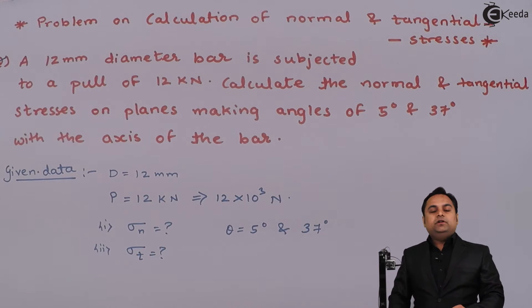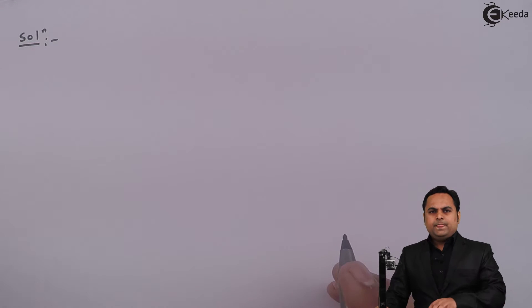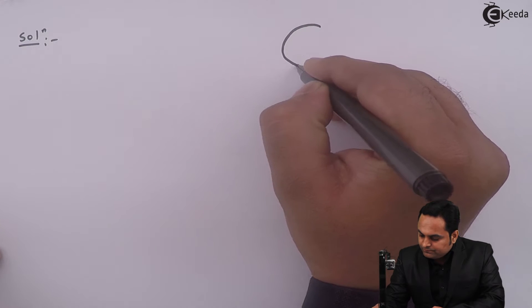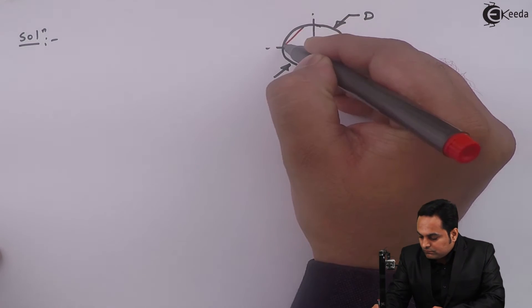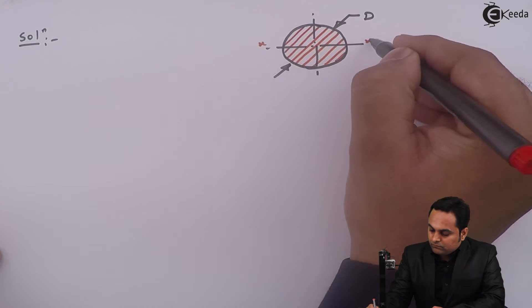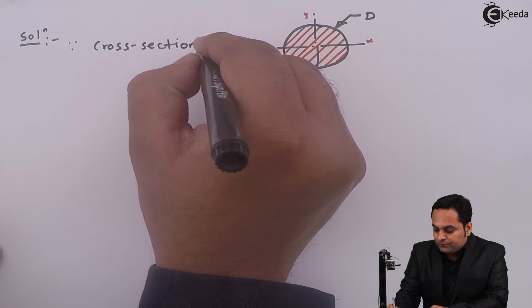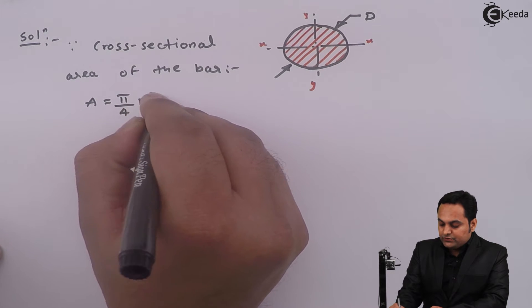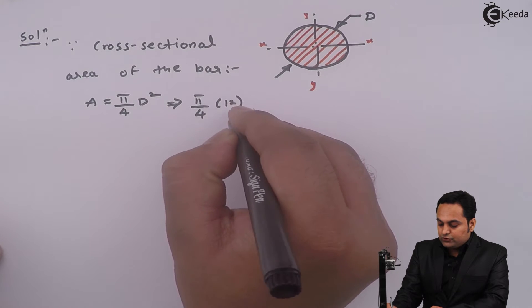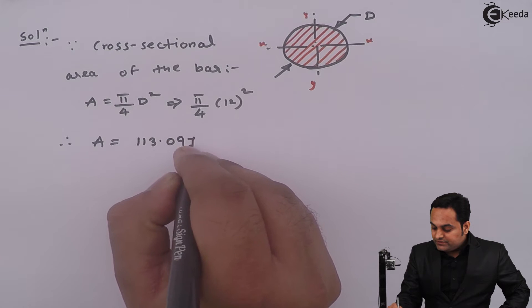Now with the data available, let us get the solution. Since the diameter of the bar is given, we can first get the cross-sectional area, which will be circular. The cross-sectional area A = π/4 × d² = π/4 × 12² = 113.097 mm².